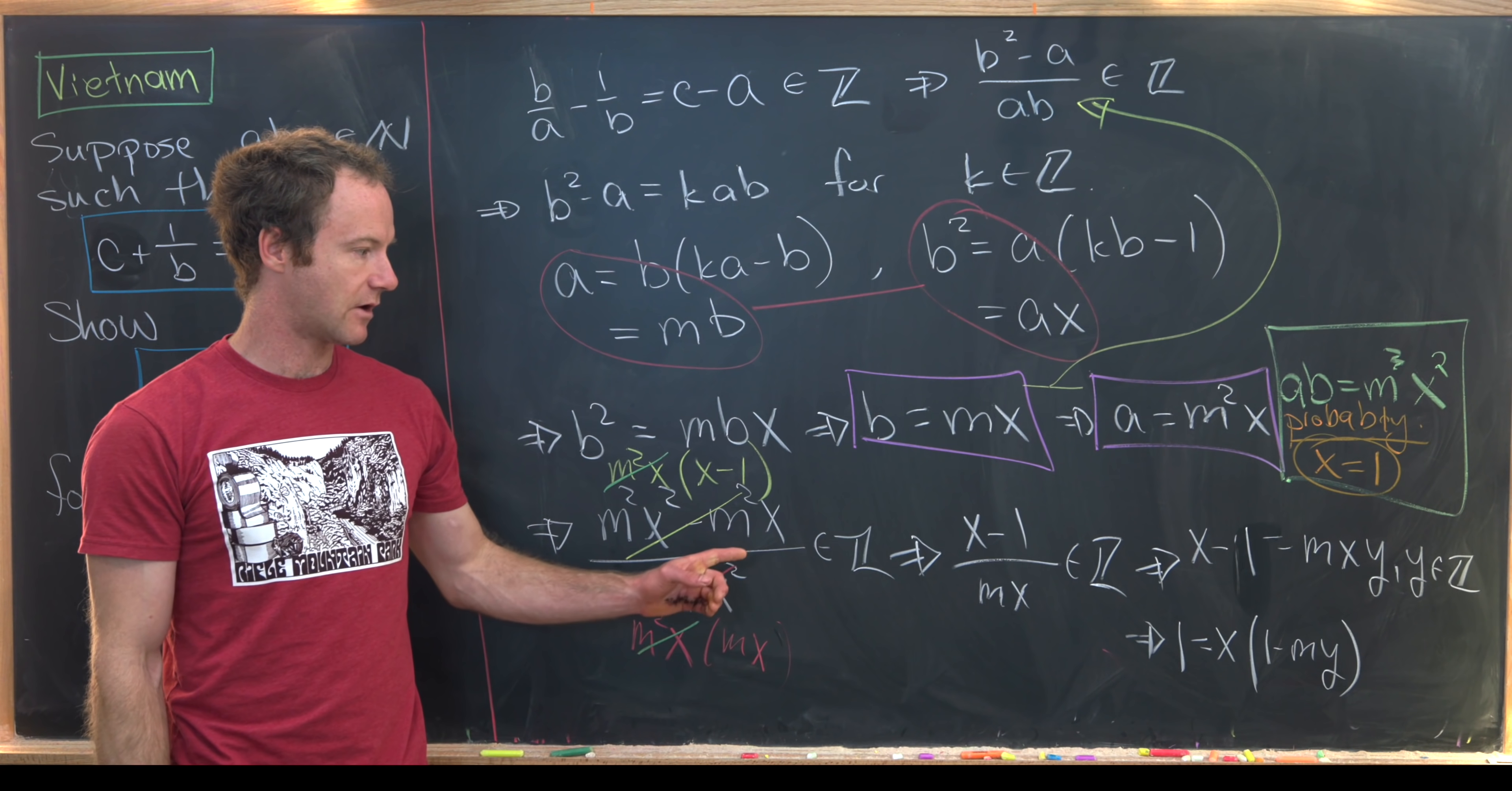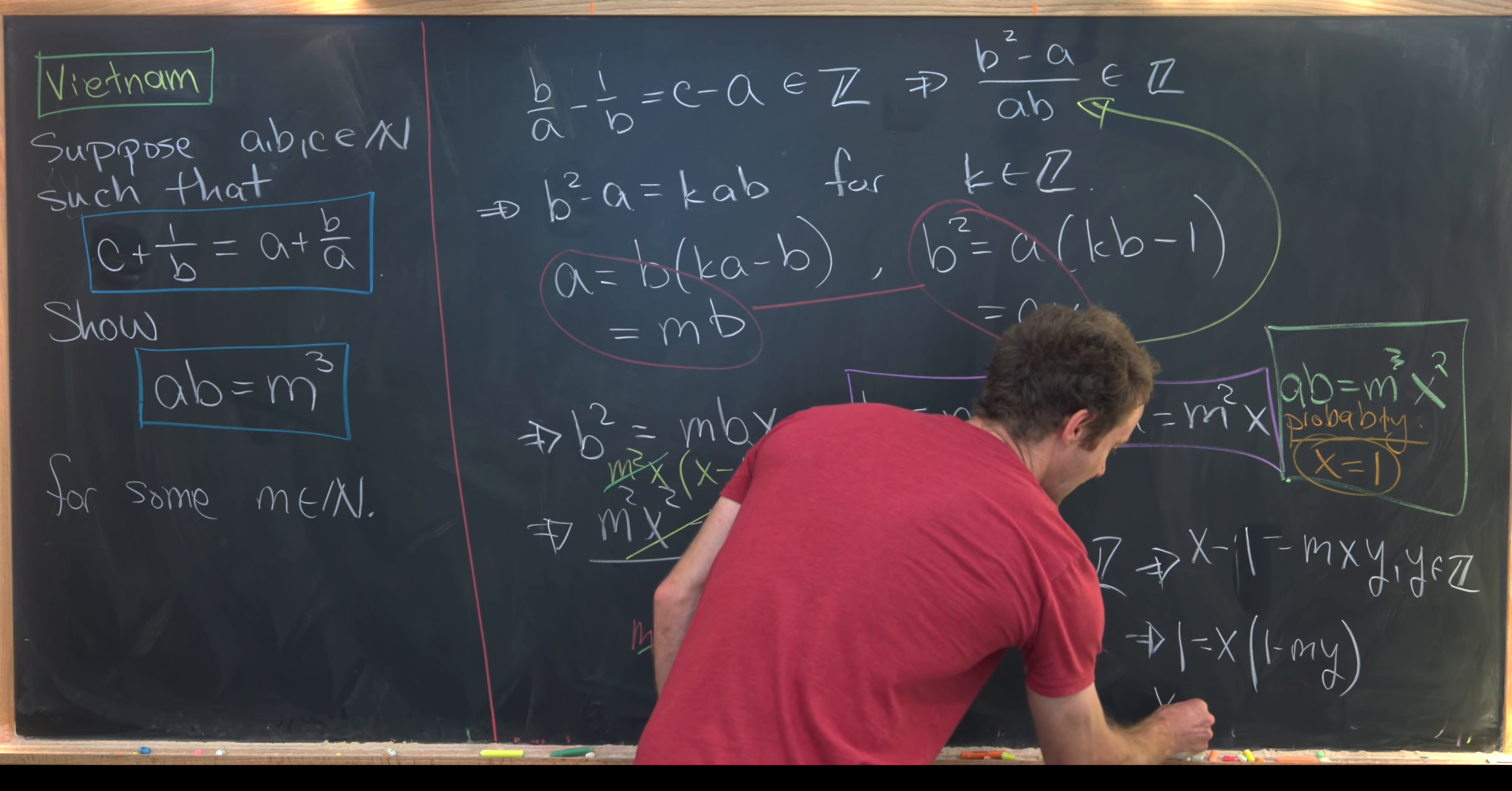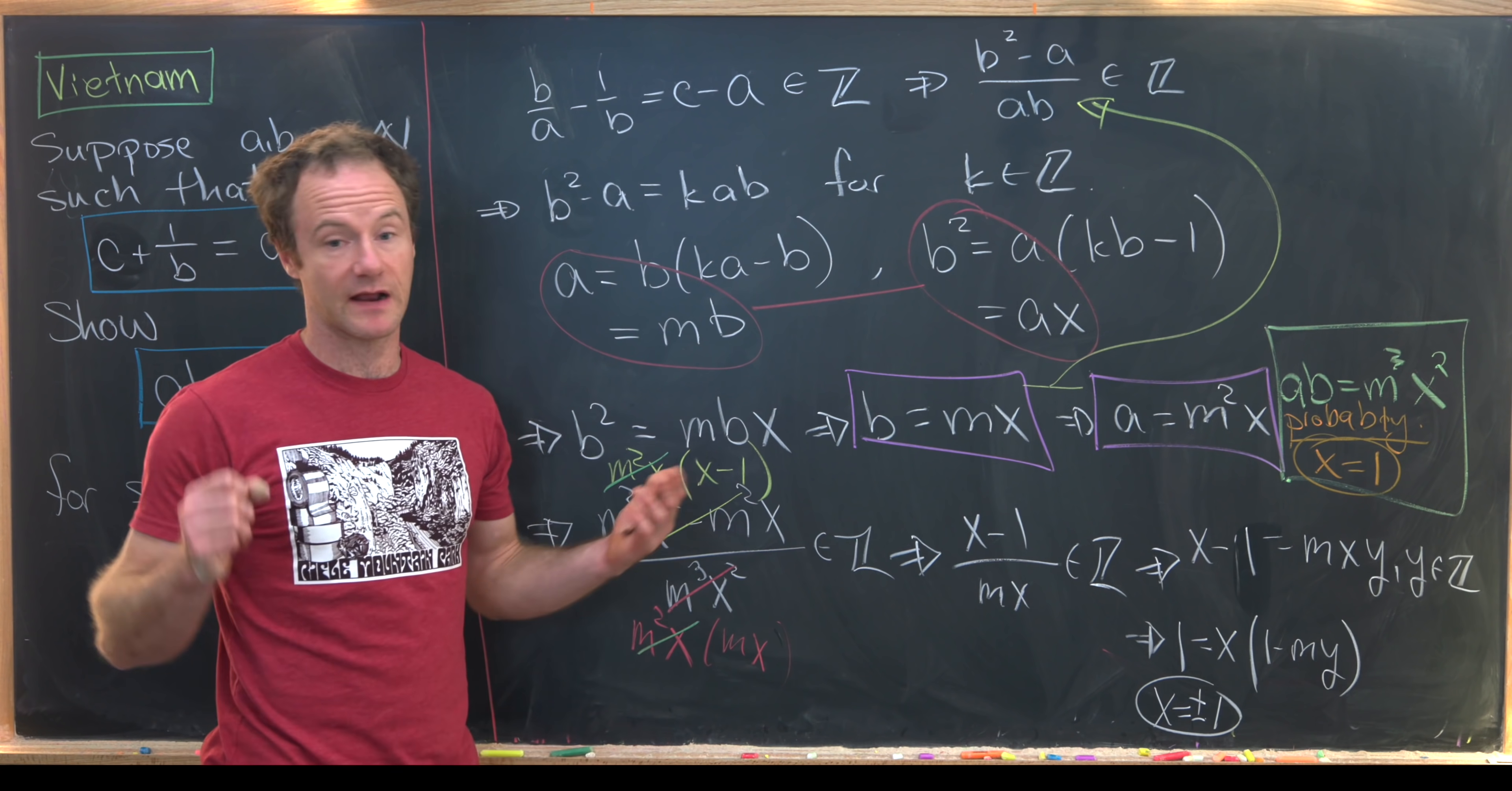Okay, but now if 1 is equal to the product of two integers, then that means those integers are both plus or minus 1. So here we have X is actually equal to plus or minus 1. Again, that's the only way that you can take the product of two integers and get the number 1. That's kind of obvious.